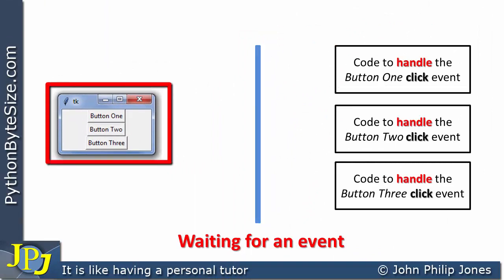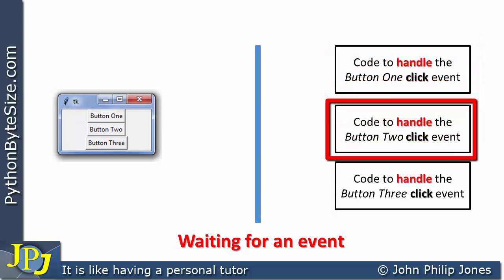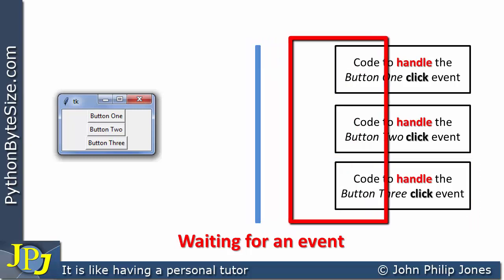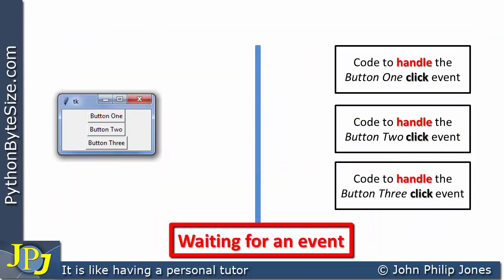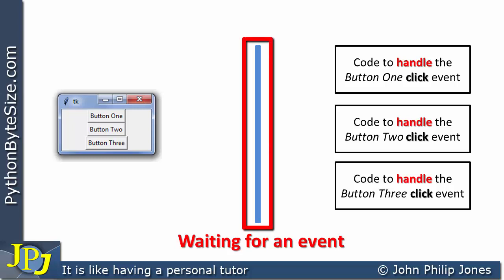The user of this computer program will be aware that they can click on one of three buttons. As a programmer, I would know that I need an event handler for each of these buttons, represented by these rectangular boxes. This one handles the button one click event, this one handles the button two click event, and so on. This is the mechanism that makes a decision as to which of these three will be executed — waiting for an event to occur. A computer program has to be going through the fetch-decode-execute cycle, so something is going to be executing, and this mechanism will have a loop of some kind.